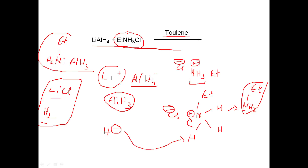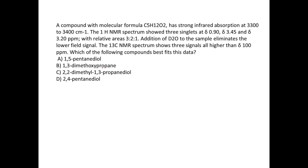Just by going with the general flow of concepts you can easily predict the answer. Now let's move on to the next question. A compound with molecular formula C₅H₁₂O₂ has strong IR absorption at 3300–3400 cm⁻¹. The proton NMR spectrum shows three singlets at δ 0.9, 3.45, and 3.2 ppm with relative areas 3:2:1.